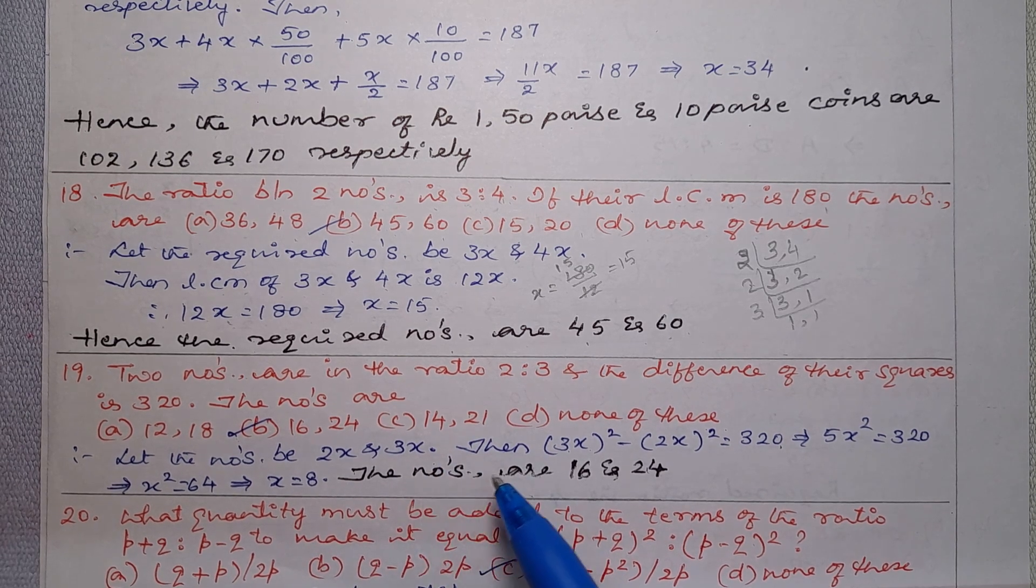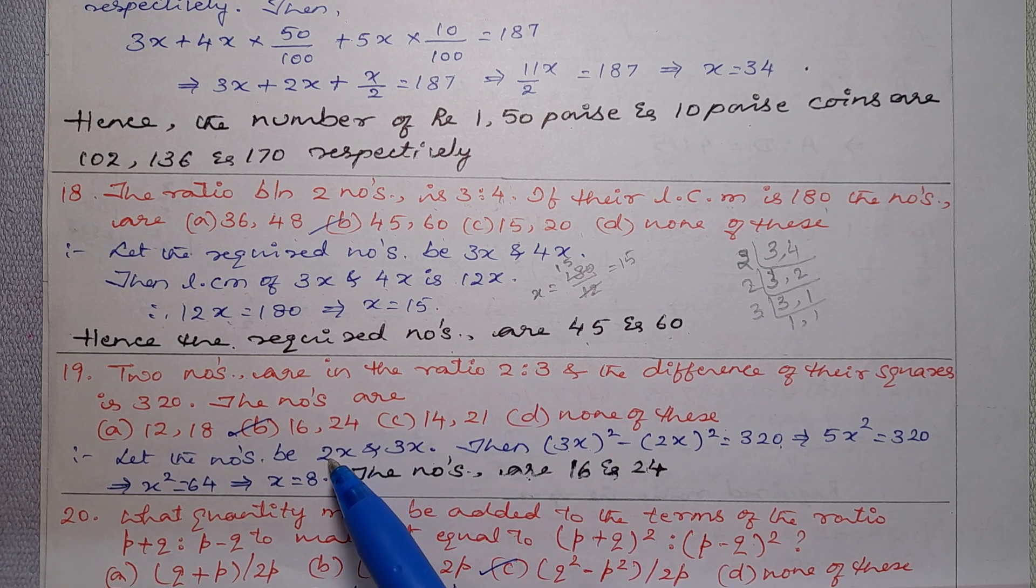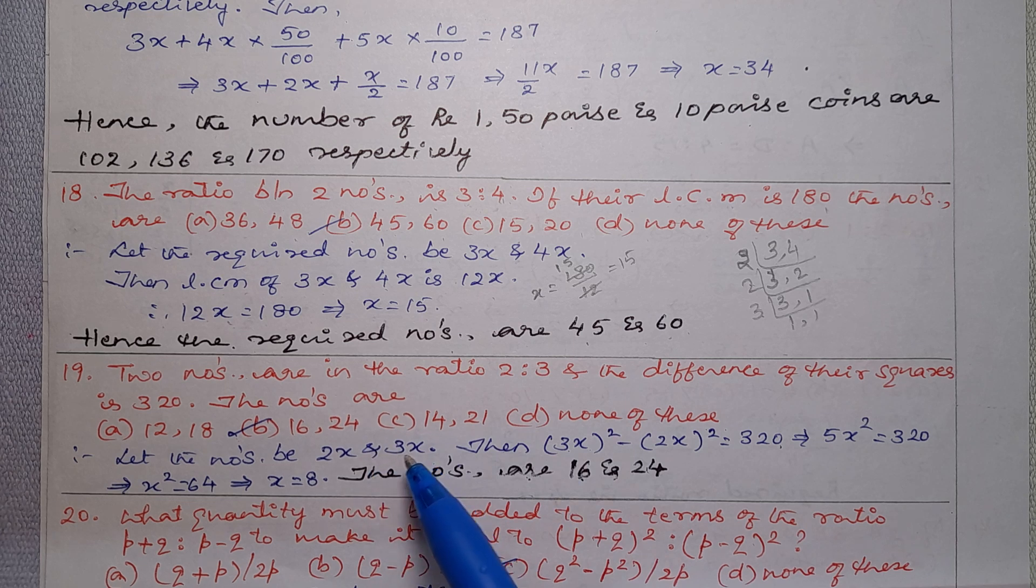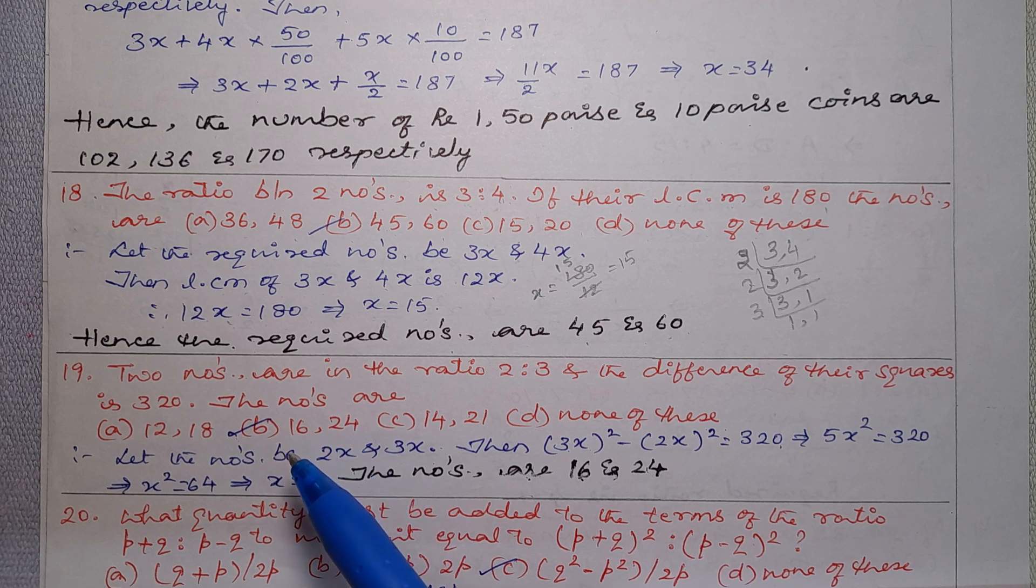But we consider only positive number. So the numbers are 2x and 3x. 2 into 8, 2 eights is 16. Next, 3x is 3 into 8, 3 eights is 24. So 16 and 24 is the answer. So option B is the correct answer for this example.